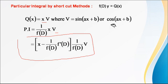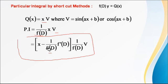We use the formula: x minus 1 upon f(D), where f(D) means f(D), into f dash of D — the derivative of f(D) — into 1 upon f(D) into v. Here v is either sin(ax + b) or cos(ax + b).